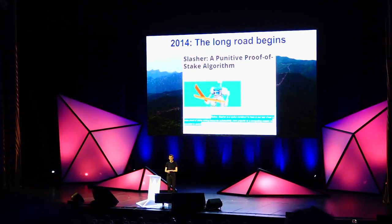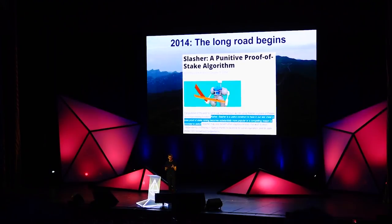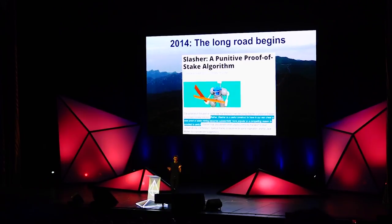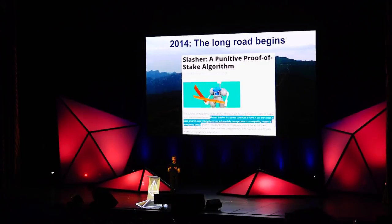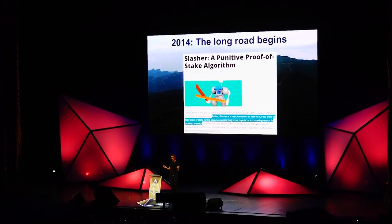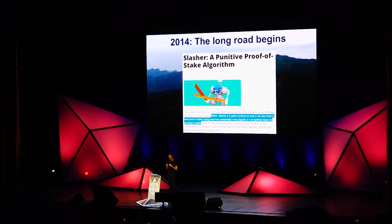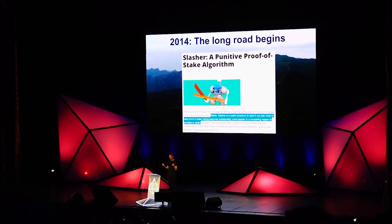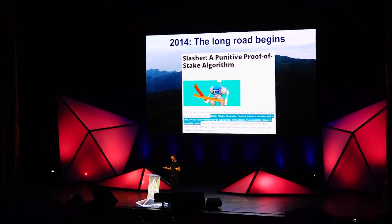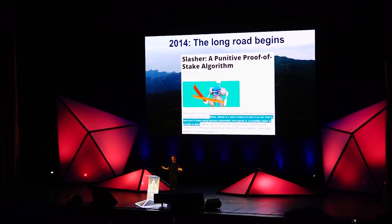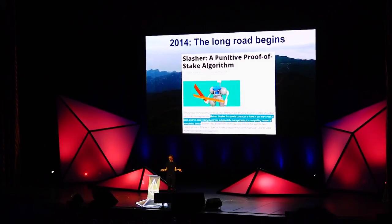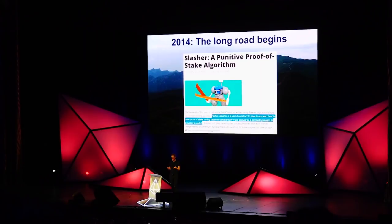How did we get here? The road to proof-of-stake actually started way back in 2014, with a blog post that I published in January, describing this algorithm called Slasher. Slasher introduced kind of the most basic concept in a lot of proof-of-stake algorithms: the idea that if you get caught doing something wrong, this can be proven, and you can be penalized for it, and how this can be used to increase security. But at the time, I believed that Slasher is a useful construct to have in our war chest in case proof-of-stake becomes substantially more popular, but we're not doing that yet. So at the time, it was not even clear that proof-of-stake was even the direction we were going.